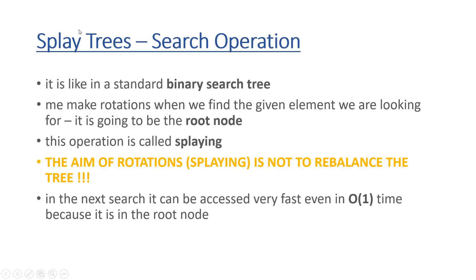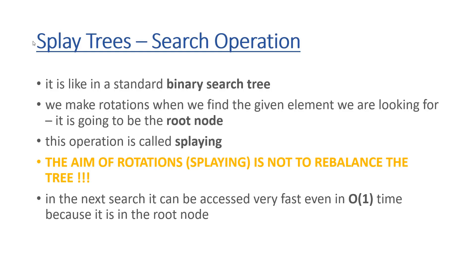So what if we search for a given item in a splay tree? This is the fundamental operation for splay trees. It is very similar to a standard binary search tree: we have access to the root node exclusively. If the item we are looking for is smaller than the value in the actual node, we go to the left; otherwise, we go to the right, until we find the item. This gives O(log n) logarithmic running time complexity if the tree is balanced, or O(n) linear if the tree is not balanced.